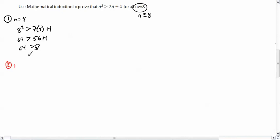So we're going to show now that it works for n equals k. So we're going to assume that k squared is greater than 7k plus 1. Alright, assuming of course that k is 8 for the moment.